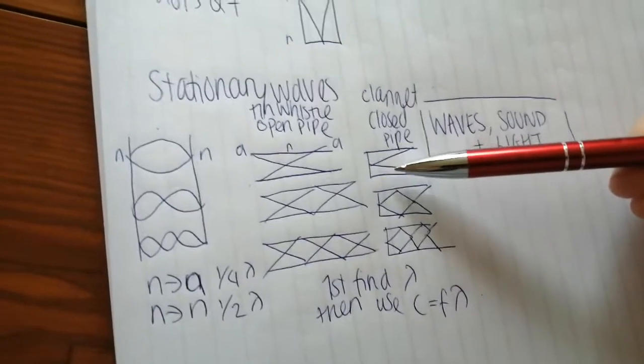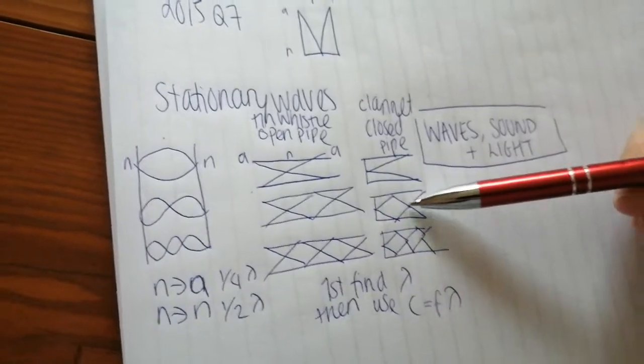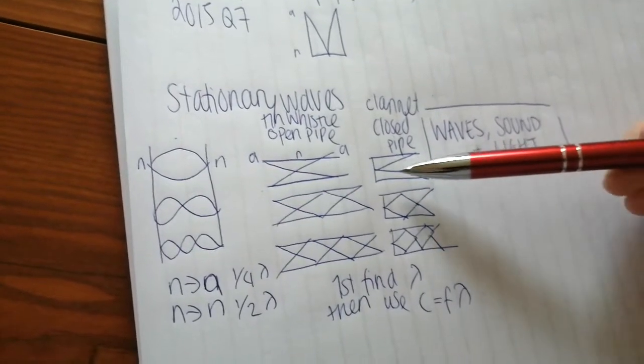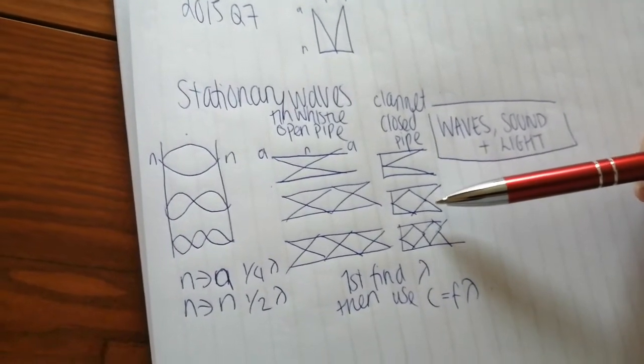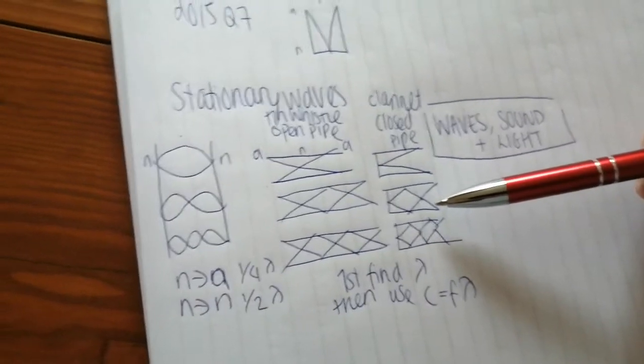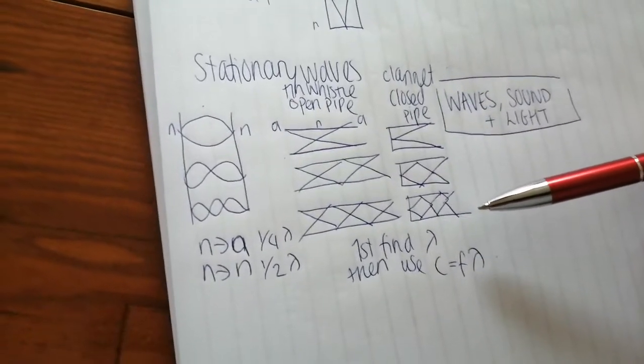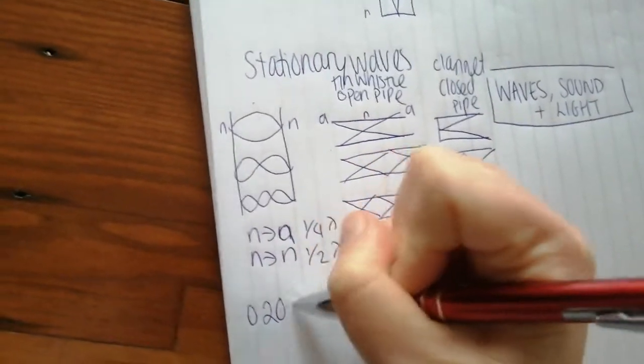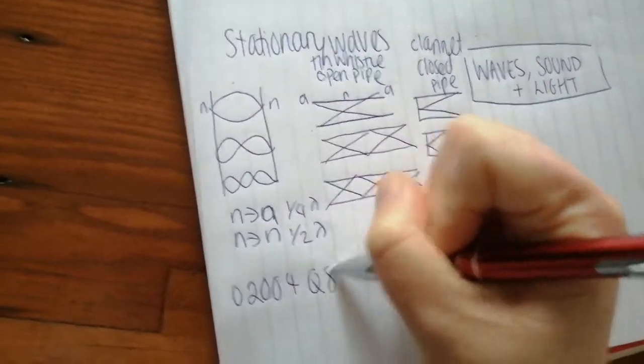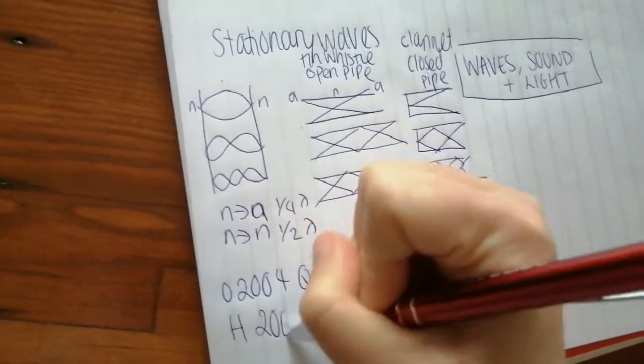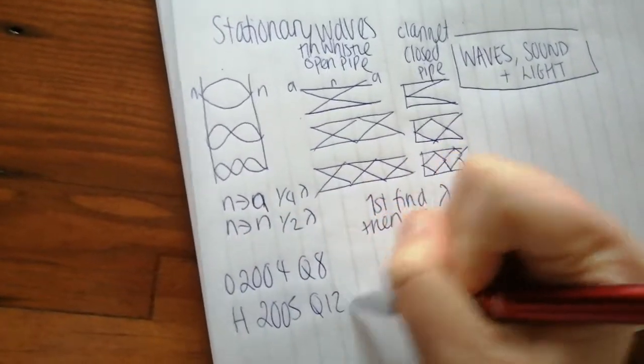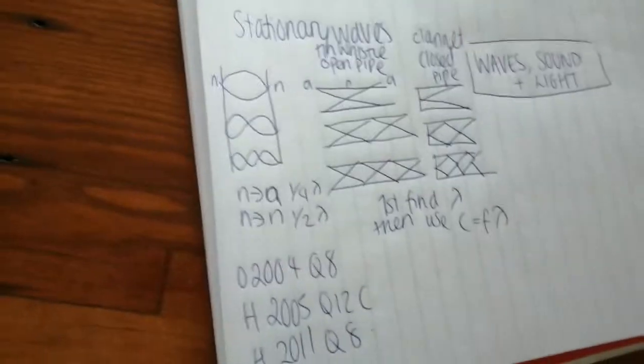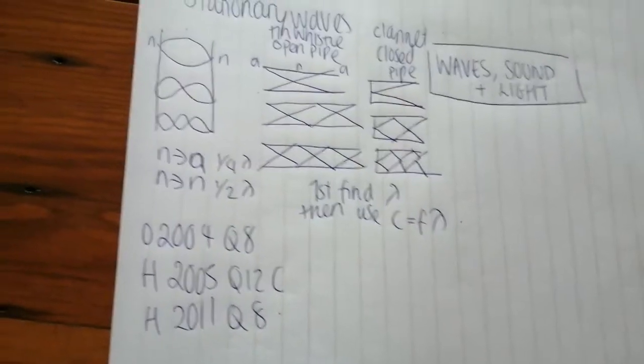If you work out any one of these, you can just work out this one or this one by being a multiple of it. So let's say I found out that the frequency of this one was 20 hertz. This would be three times that would be 60 hertz and so on. So I'm just going to get you to do some questions based on this. So we have ordinary level 2004, question 8. We have higher level 2005, question 12c. And we've higher level 2011, question 8. So you can pause and you can do that question now.